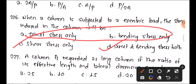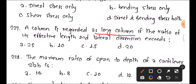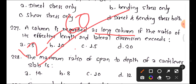Question 227: A column is regarded as a long column if the ratio of its effective length to lateral dimension exceeds a certain value. The answer differentiates between a short column and a long column based on this ratio. The correct option is for the long column classification.